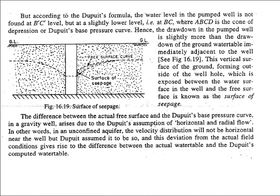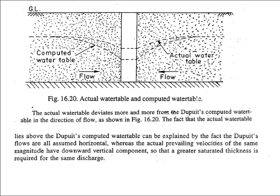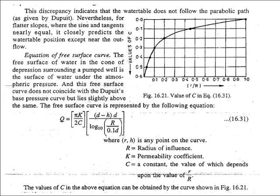The actual water table or free surface is A-B'-C'-D, while the Dupuit base pressure curve is A-B-C-D, computed using Dupuit's assumption. Since he assumed horizontal and radial flow, the water table in his formulation goes down further than the actual level. This is the main reason behind the difference between the two curves.